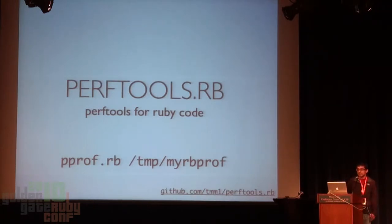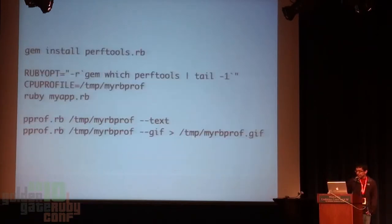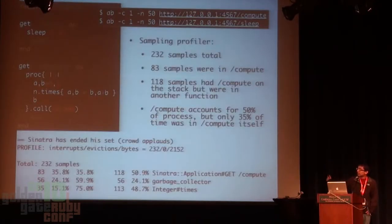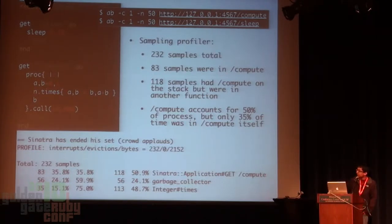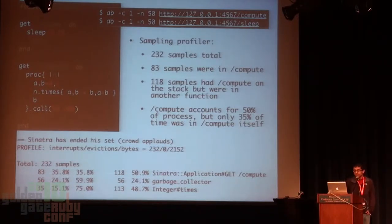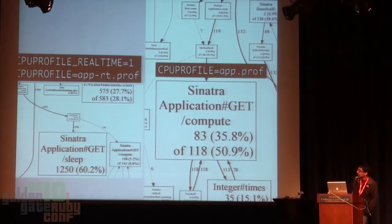I was able to trace that back to the Time.parse function and figured out that all these MySQL datetimes were being parsed in Ruby land and eating up a lot of CPU. What I wanted was instead of seeing C-level functions in this output, to get Ruby-level functions. So I created a project called PerfTools.rb, which is the Ruby equivalent of PerfTools.